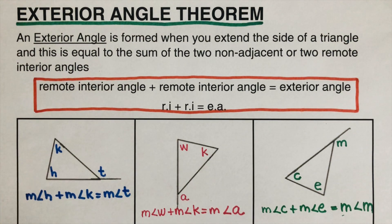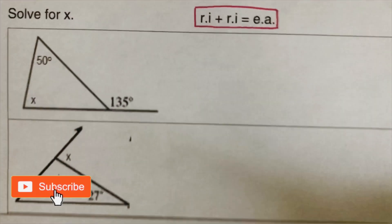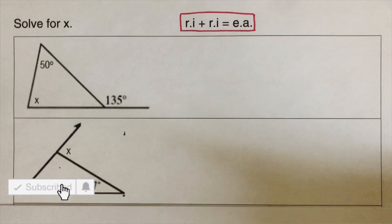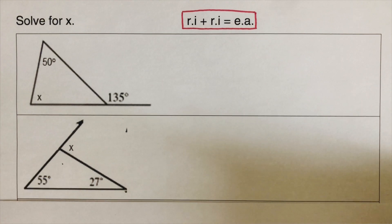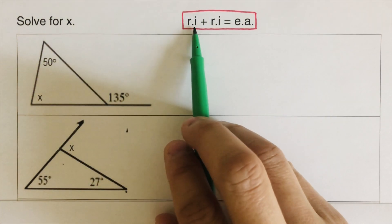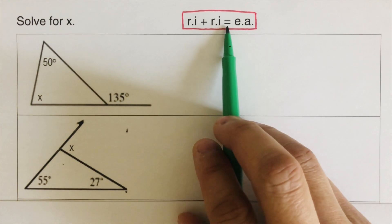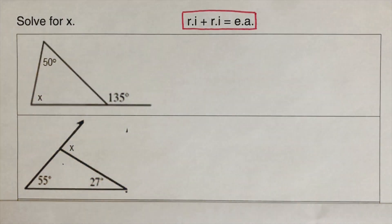Now let's go over problems with numbers. What we did on this page was just setting up the equation. Now let's look at how to solve for missing pieces in a triangle. The formula is: the measure of one remote interior angle plus the measure of the other remote interior angle equals the measure of the exterior angle.